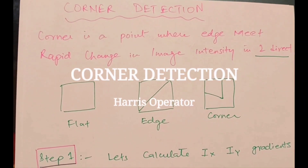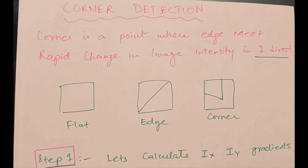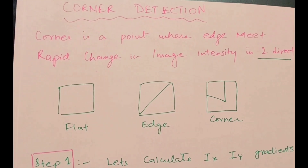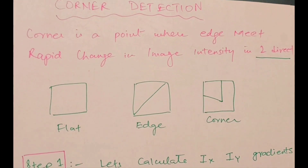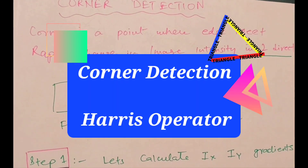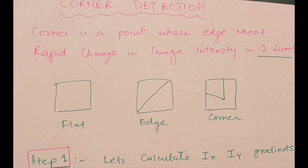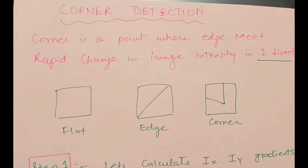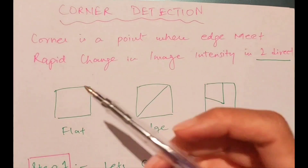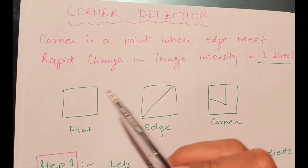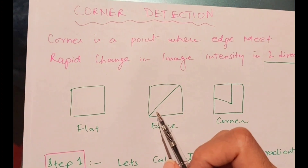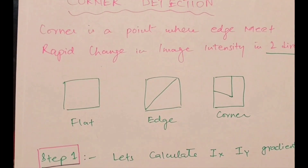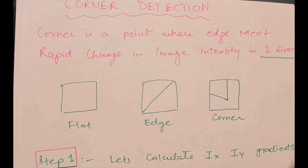Today we are going to talk about corner detection. To talk about corner detection, first we need to understand what a corner is. A corner is a point where two edges meet. At a corner, we find rapid changes in image intensity in two directions — the x-axis and y-axis. For example, we can see a flat region, a diagonal edge, and a corner in these example images.